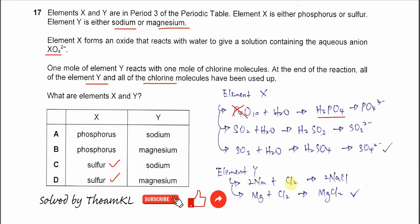So sodium react with one mole of chlorine is 2 to 1 mole ratio.